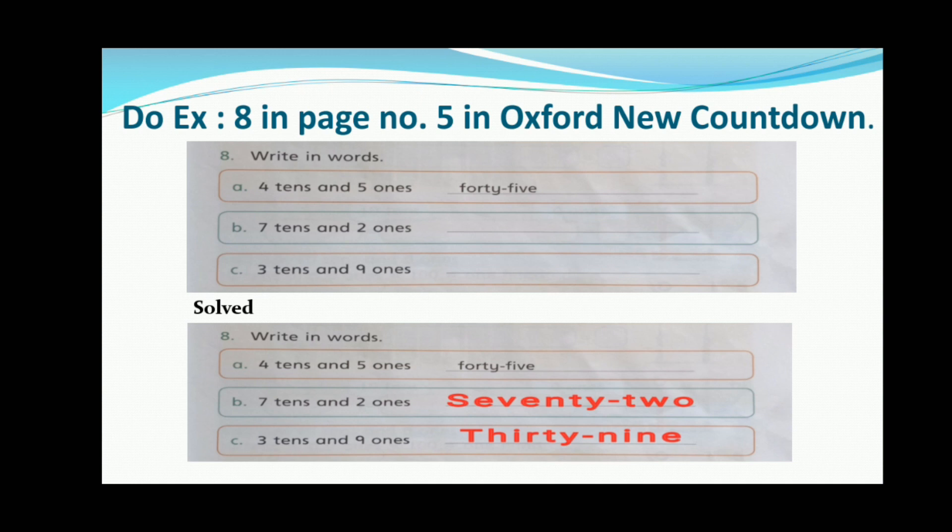Do Exercise 8 on page number 5: write in words. 4 tens and 5 ones — the place value of 4 tens is 40 and 5 ones is 5, so 40 plus 5 equals 45. We will write 45 in words as forty-five. Now complete all the following parts.